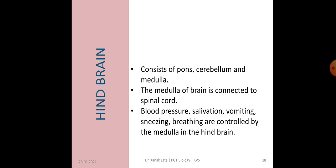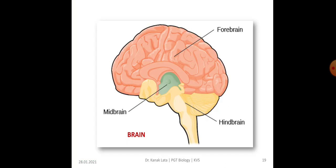Now let us discuss about hindbrain, which consists of pons, cerebellum and medulla, also called medulla oblongata. Pons consist of fiber tracts that interconnect different regions of the brain. Medulla of the brain is connected to spinal cord. Blood pressure, salivation, vomiting, sneezing, breathing, cardiovascular reflexes, and gastric secretions are controlled by the medulla in the hindbrain. Cerebellum helps in balancing and posture of our body. In the given figure, it shows the parts of brain: forebrain, midbrain and hindbrain.